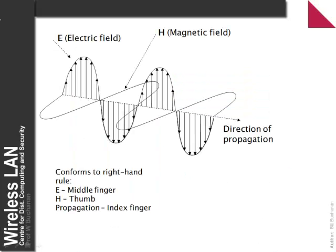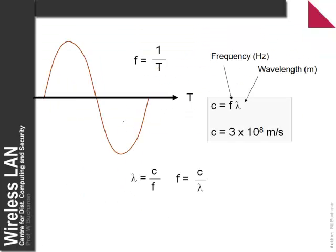Let's look at some basic fundamentals of electromagnetic waves. An electromagnetic wave propagates with the right-hand rule, where we can have an E field — in this case the E field is up and down — and at right angles to that we have an H field. The direction of propagation is also at a right angle to the E and the H field. The wave itself is a sine wave of a certain frequency.